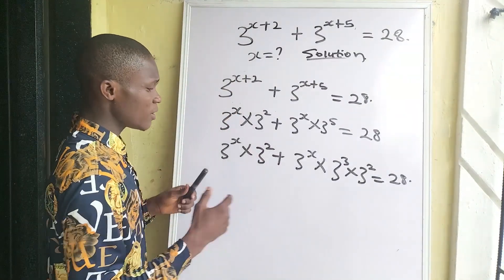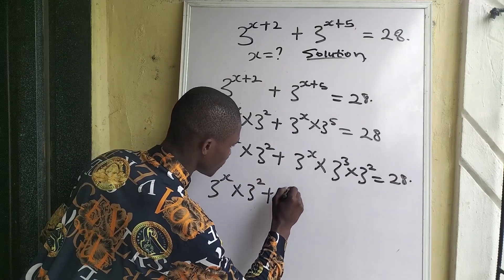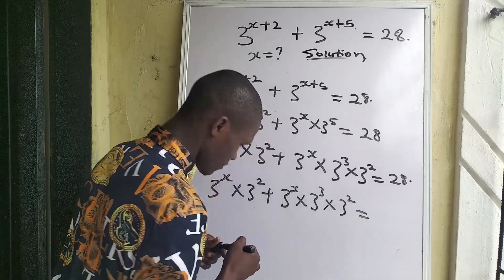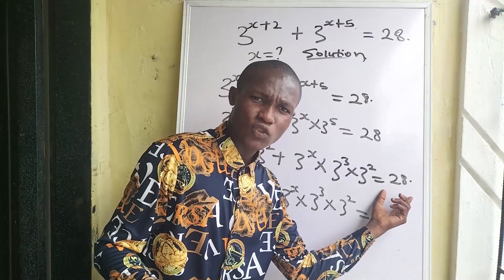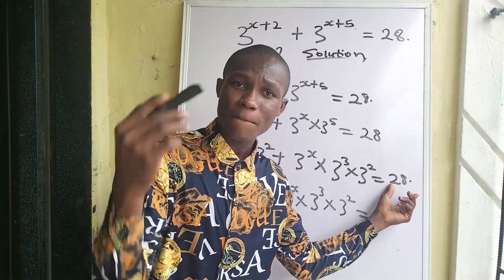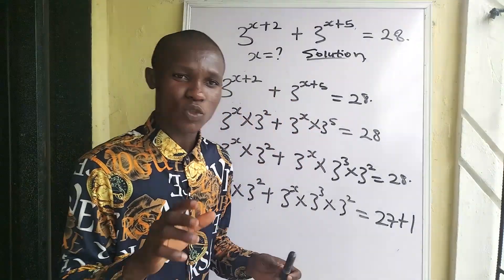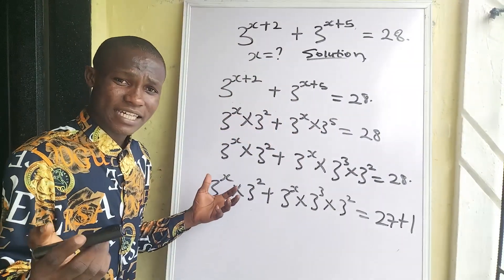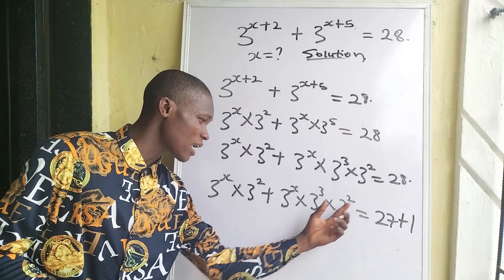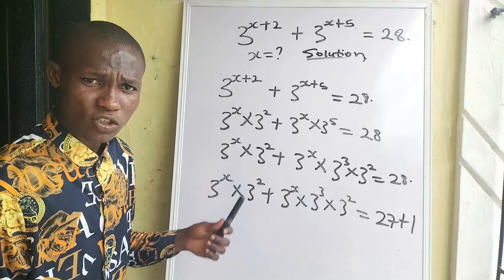The next step: we can rewrite this as 3 to the power of x times 3 to the power of 2, plus 3 to the power of x times 3 to the power of 3 times 3 to the power of 2, equal to 28. Now we break 28 into 27 plus 1, because 27 plus 1 equals 28. From the left hand side, we can see that 3 to the power of 2 is common at both terms, so we can factor out 3 to the power of 2.